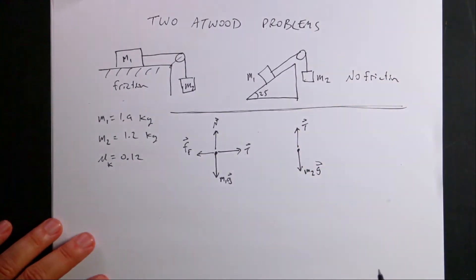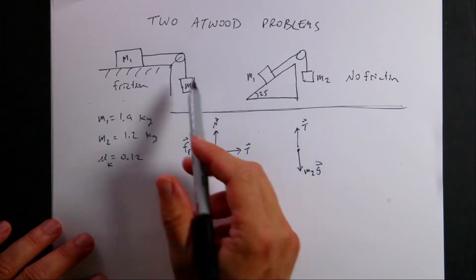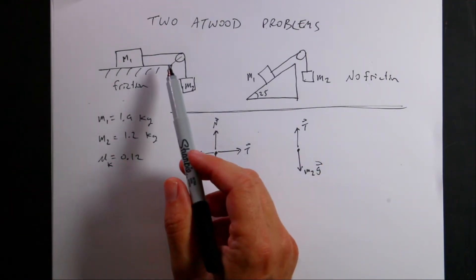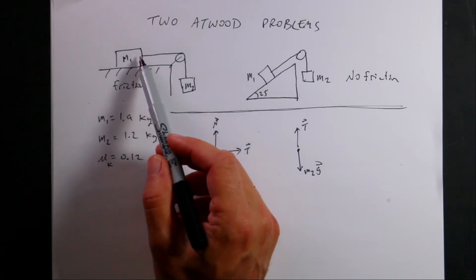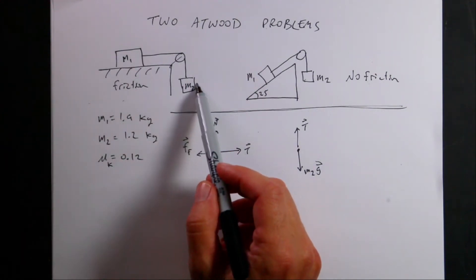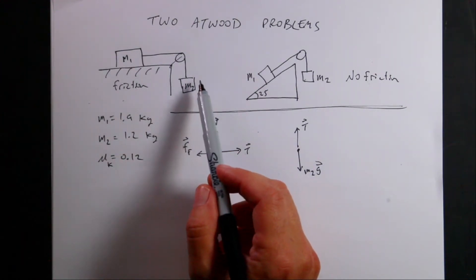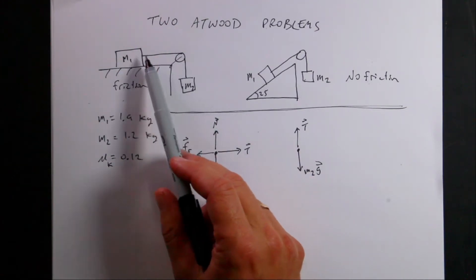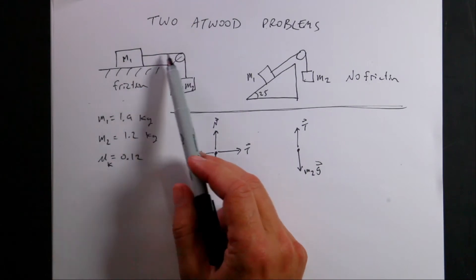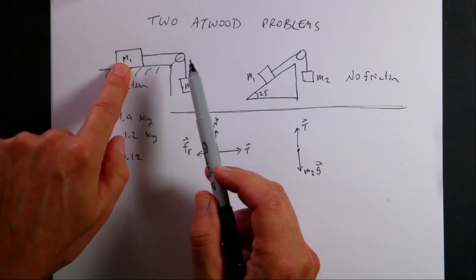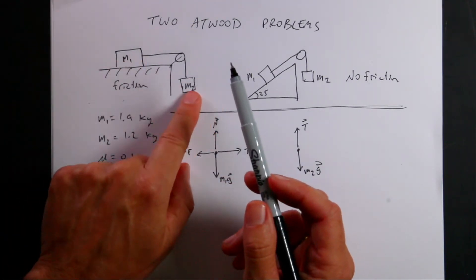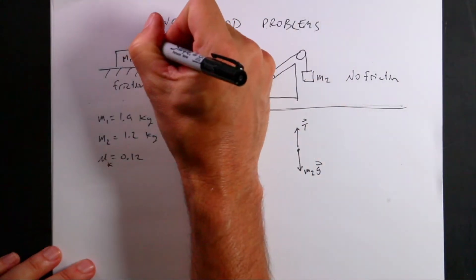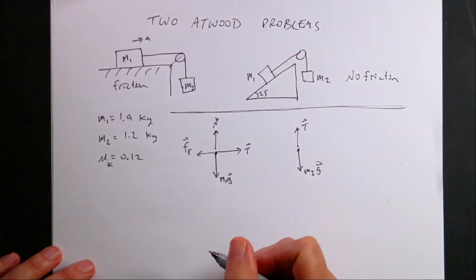There are three important things about tension. First, if it's a massless string, the tension has a constant magnitude — so the tension on M1 equals the tension on M2. Second, strings only pull in the direction of the string. Third, the length doesn't change, so the acceleration of M1 must equal the acceleration of M2; otherwise the string would stretch. I'm going to call that acceleration A.